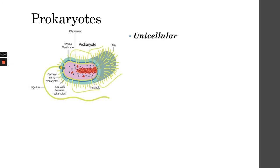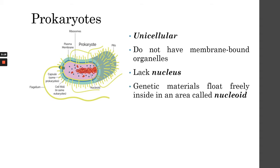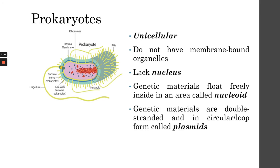Let's discuss what prokaryotes are. Here's a picture of a prokaryote. Prokaryotes are mostly unicellular and do not have membrane-bound organelles. They also lack a nucleus, meaning their genetic material does not reside inside a nucleus but floats freely in an area called the nucleoid. Their genetic material is double-stranded, but instead of chromosomes, it is in a circular or loop form called plasmids.